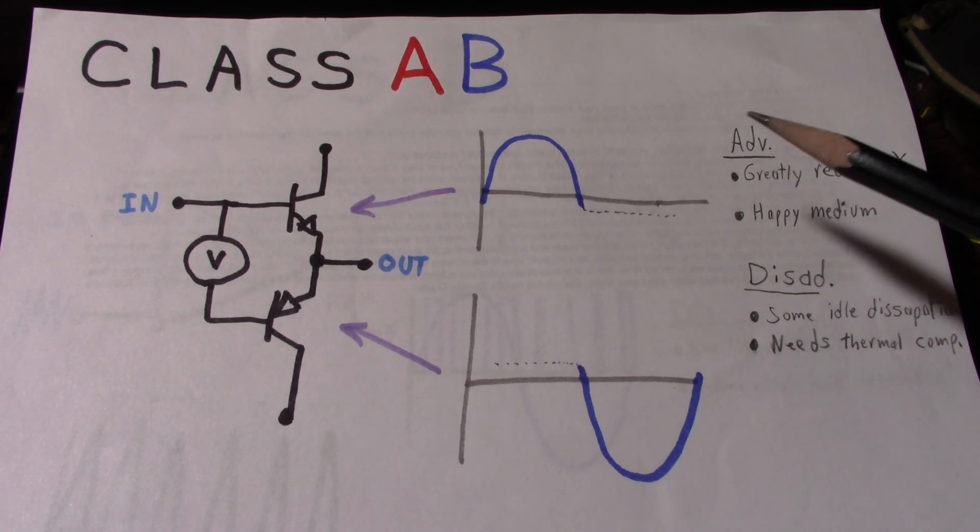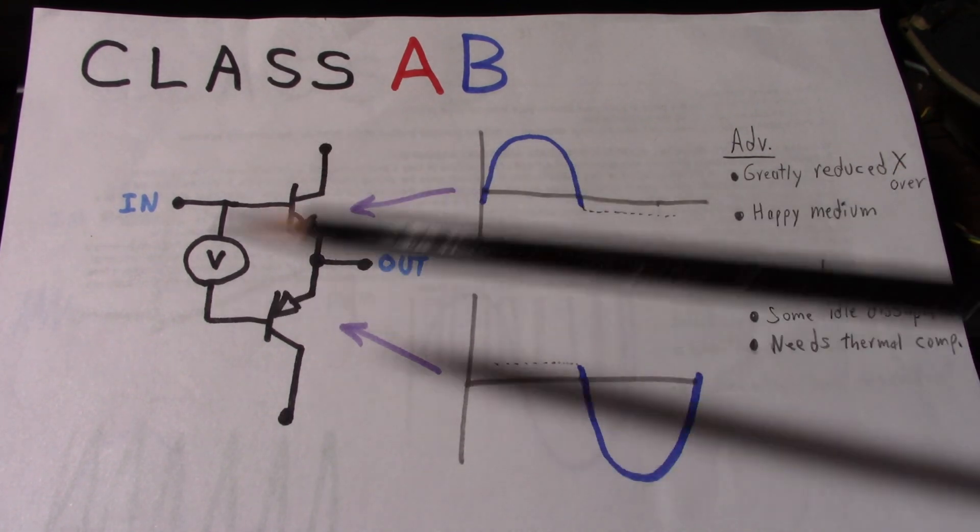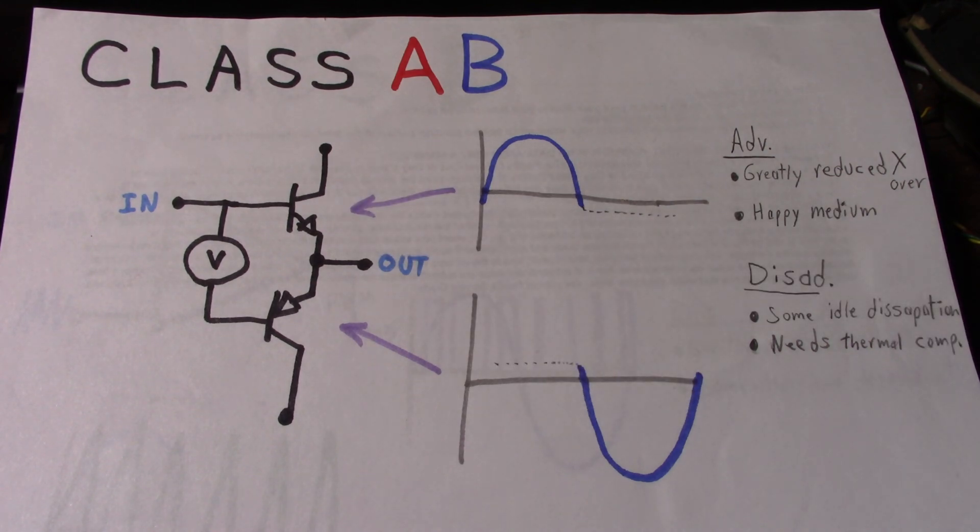So the advantages are greatly reduced crossover distortion and what I call a happy medium. It's a lot more efficient than Class A. If you recall, Class A can be 25% to 50% in some designs, but usually it's 25%. Those are theoretical numbers. The actual efficiency will be less.